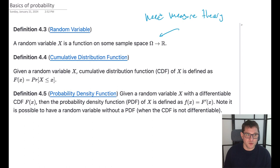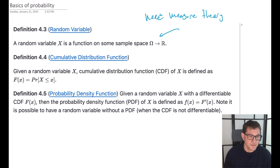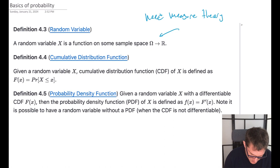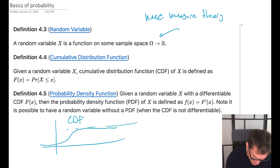Two basic ideas in probability are the cumulative distribution function (CDF) and the probability density function (PDF). If you have a random variable X defined on the real numbers, you can talk about its CDF — this function of x — which is just the probability that the random variable is less than or equal to x. The CDF is always an increasing function; it goes from zero to one.